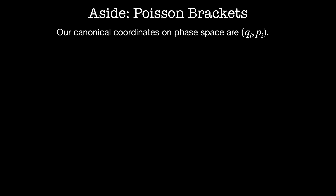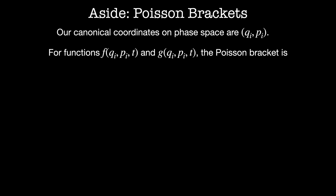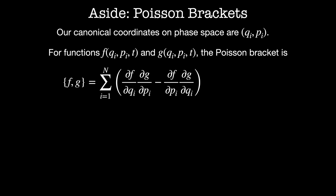Poisson brackets are the classical analog of the quantum mechanical commutator. We'll start with a set of canonical coordinates on phase space: some generalized positions q_i and their corresponding generalized momenta p_i. Imagine we have two functions on phase space — f, which is a function of the q_i's, p_i's, and time, and g, which is also a function of the q_i's, p_i's, and time. Then the definition of the Poisson bracket, written as {f, g}, is given by the sum from i equals 1 to n of df/dq_i times dg/dp_i, minus df/dp_i times dg/dq_i.